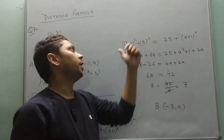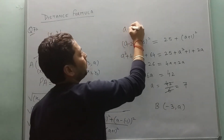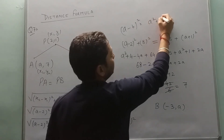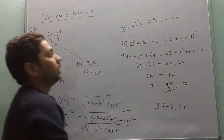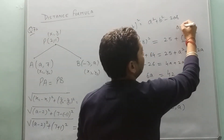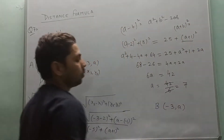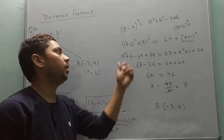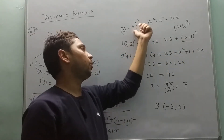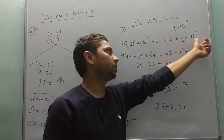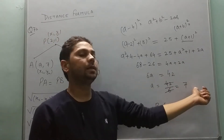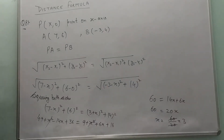After substituting values, we apply the identity (a minus b) squared equals a squared plus b squared minus 2ab, and (a plus b) squared equals a squared plus b squared plus 2ab. Solving these, we get the value of 'a'.